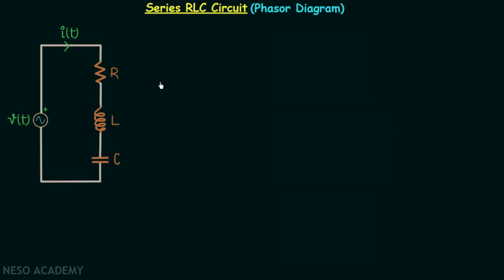This is our series RLC circuit. Let us say that voltage V has the corresponding phasor representation as V phasor, and current I, which is the current in this circuit, has the phasor representation as I phasor.